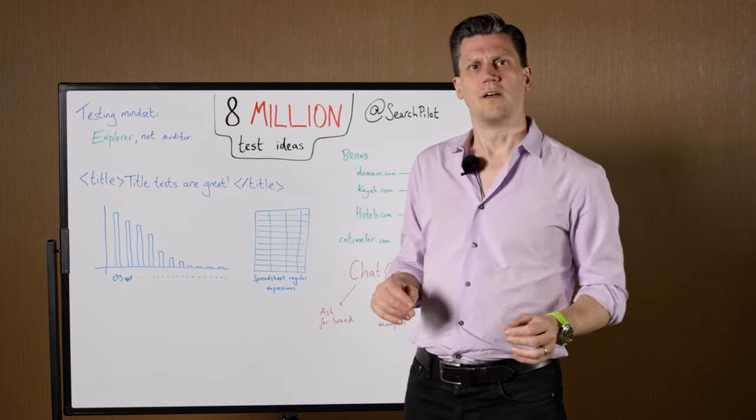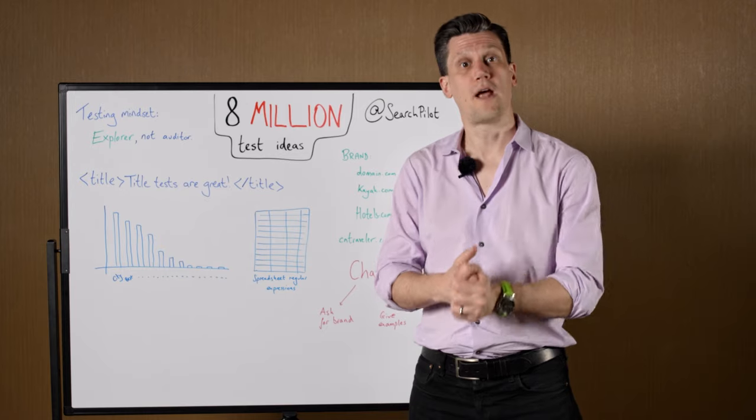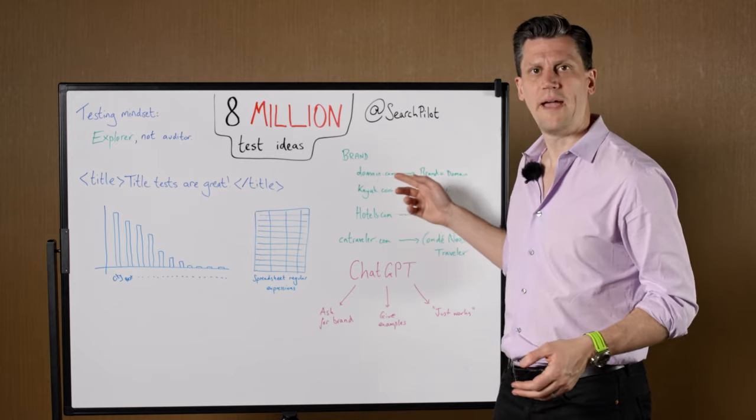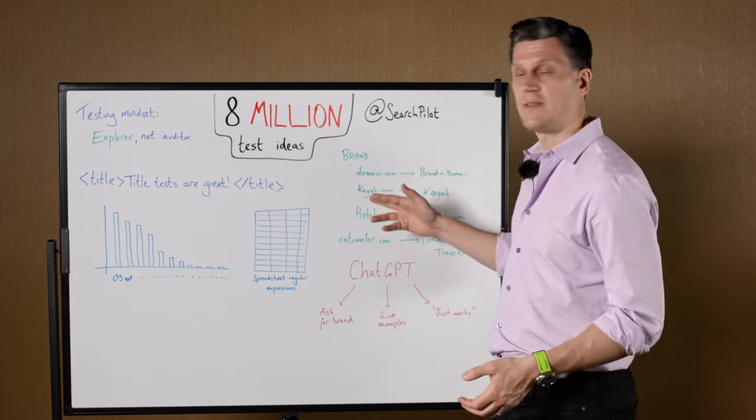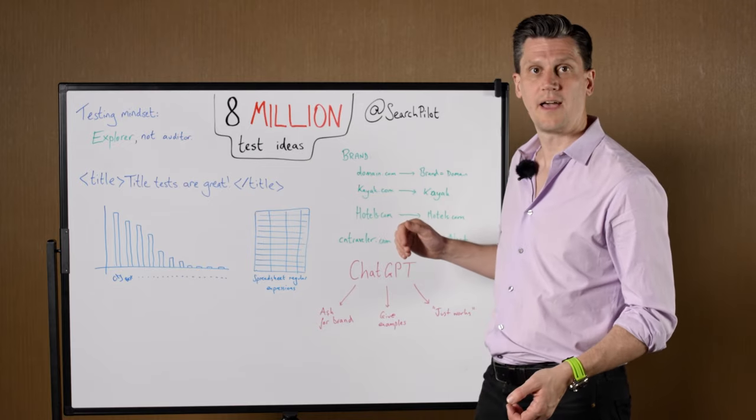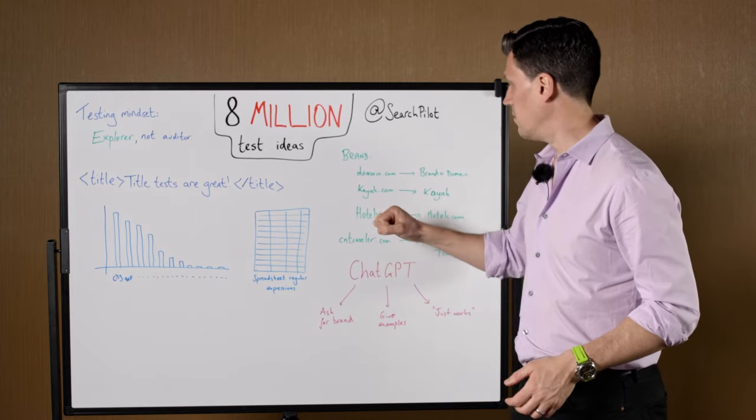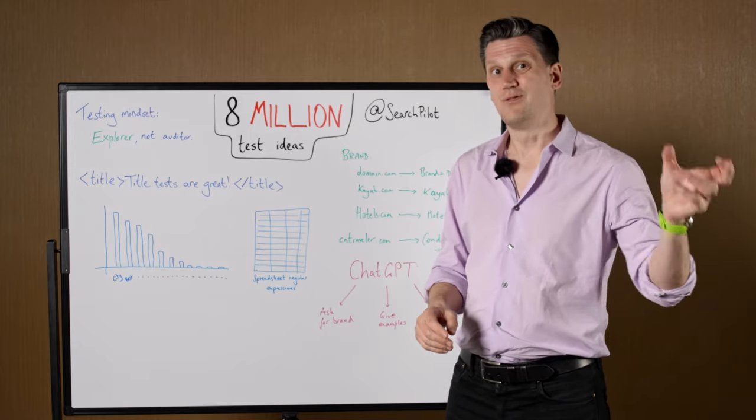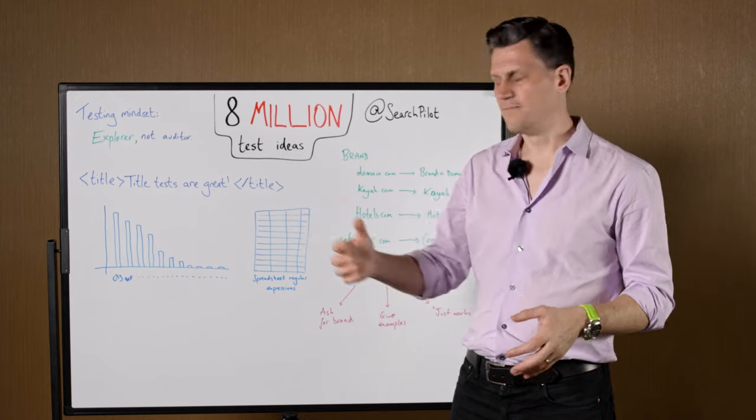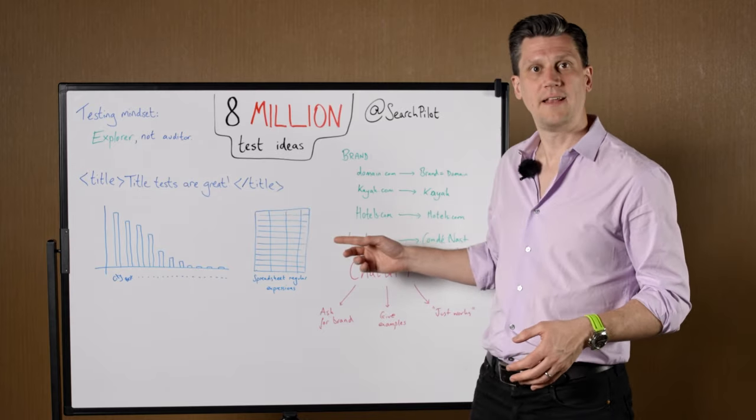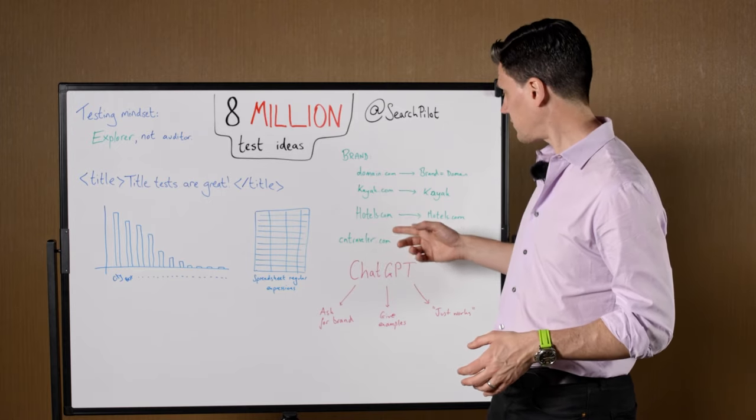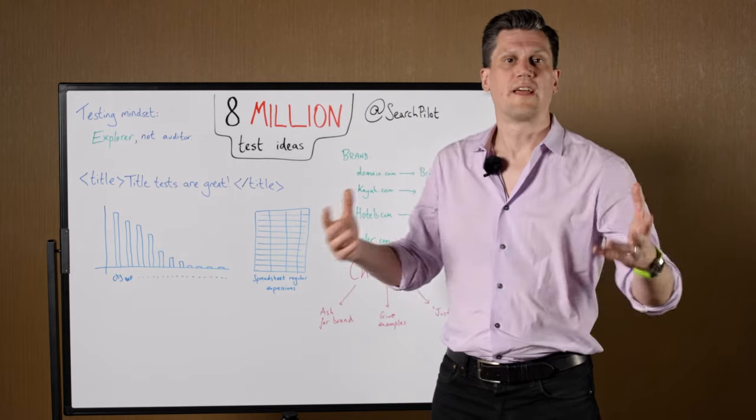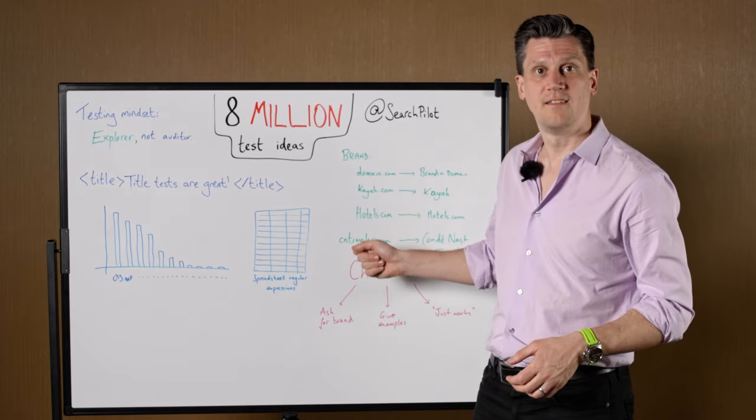There's one particular that was slightly trickier, which is I wanted to say, does the title include the brand of the company? At first glance, that seems like it's going to be easy because you're just going from domain.com to the brand is domain, which works for something like Kayak. Kayak.com is the domain and you can pull out the brand name as Kayak. But it's not always that simple. Some use the whole domain name as the brand. So hotels.com, booking.com—the brand is not hotels or booking, it's hotels.com and booking.com. And then some of them, the information isn't even there in that domain name. So cntraveler.com, for example, the brand is Condé Nast Traveler. There's actually no way of doing that in a spreadsheet. You can't just use a regular expression and pull out those bits because that information isn't even there in that domain name.